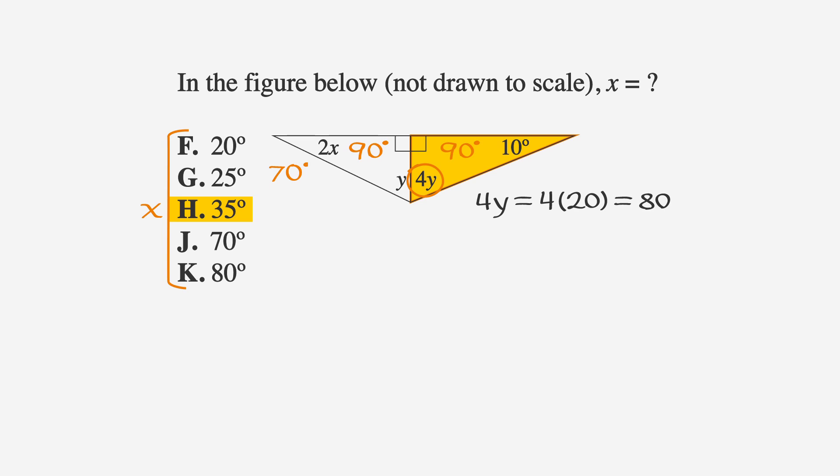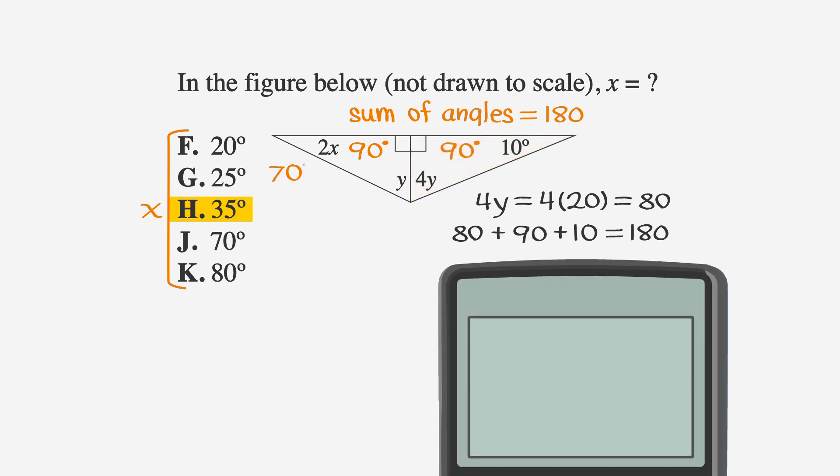So that means that if answer choice h is correct, the sum of the angles in this triangle will equal 180, or that 80 plus 90 plus 10 should equal 180. Just to make sure we make no mistakes, bring back that trusty calculator. Plug in 80 plus 90 plus 10. Drum roll, please. We indeed get 180, and we successfully used back-solving.